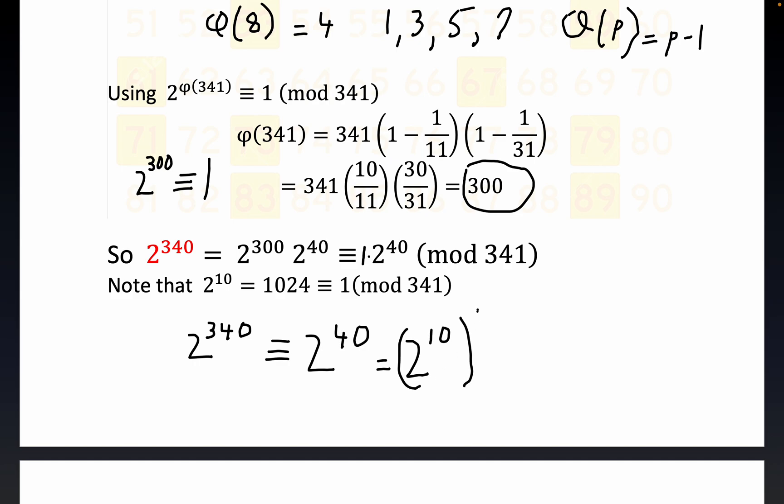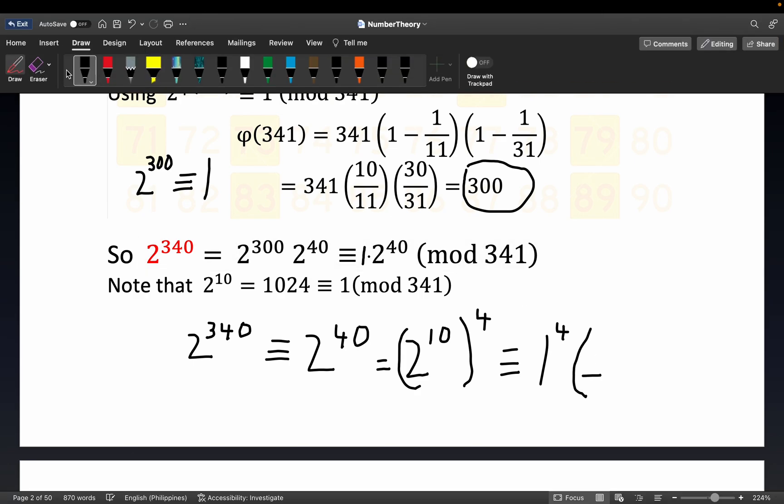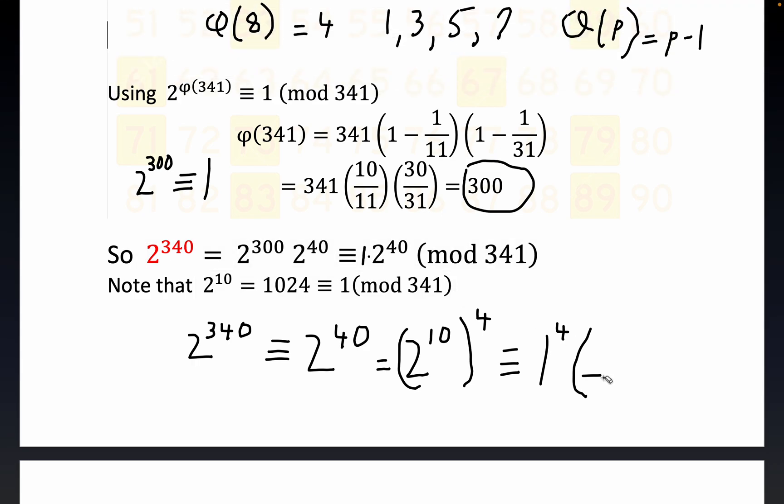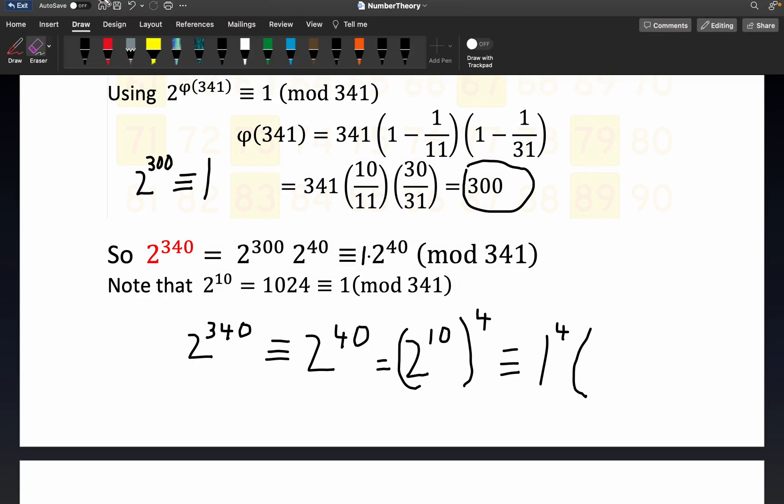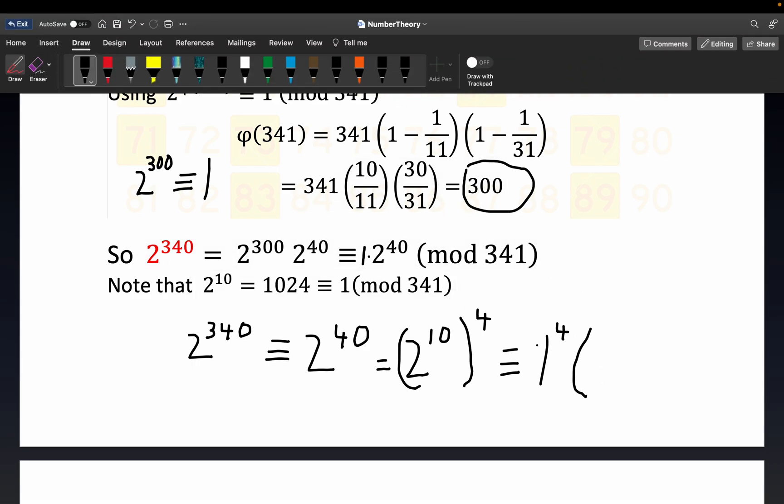And that's cool folks - see, the laws of exponents gives us that, but this part right here is congruent to 1. I'll put 1 to the 4th just for emphasis if you want, but we've shown that 2 to the 40th is congruent to 1, and I should say mod - let me erase that - mod 341.